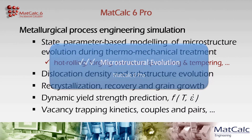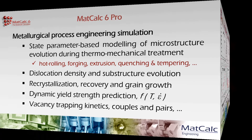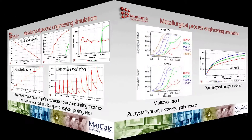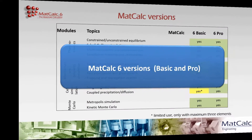The Pro version of MATCALC 6 allows simulation of the entire metallurgical process chain even in complex technological alloy systems. A special highlight in this version is a suite of models for microstructural evolution during thermochemical processes such as hot deformation, cold rolling, forging, or conventional heat treatment. The models cover mechanisms such as recrystallization, recovery, grain growth, and the evolution of crystal defects, as well as the interaction of these processes with precipitation kinetics.